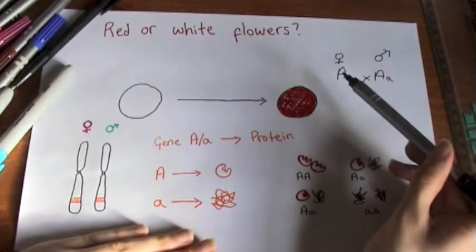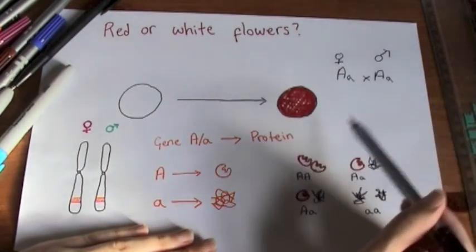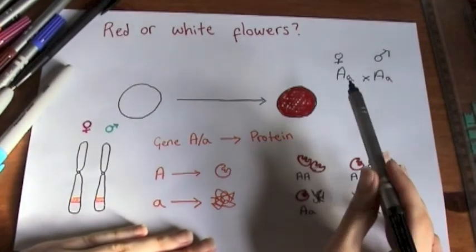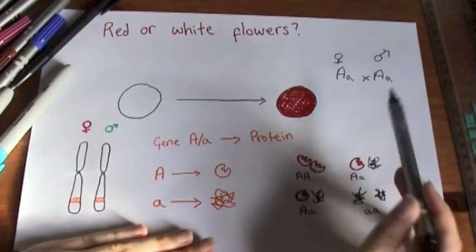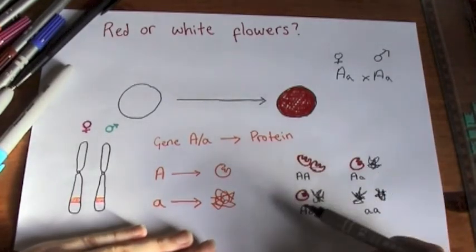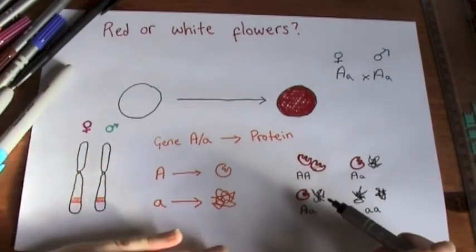So we can inherit both of the dominant copies, one from the mother, one from the father, and we get red flowers. Or we can inherit one from the mother and the little a from the father, or the big A from the father and the little a from the mother.